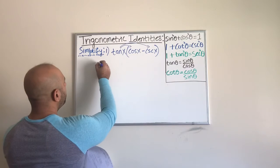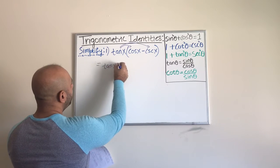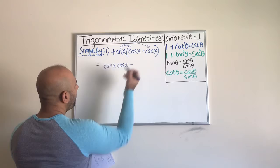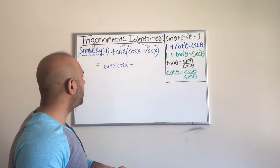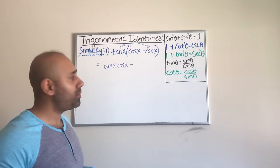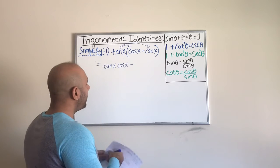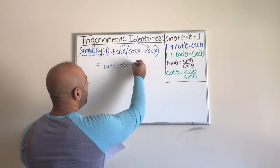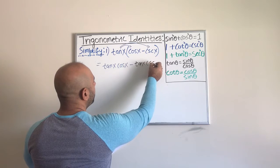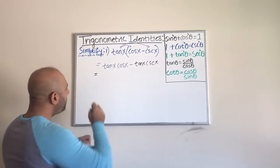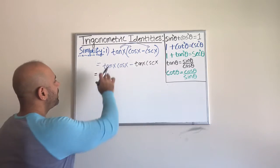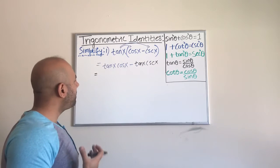So first, we want to distribute as we would do when simplifying any algebraic expression. When I distribute, this is how it's going to look: I have tan(x) times cos(x). I can't do anything with this right now, so I just write them next to each other. My next term is going to be tan(x) times cosecant(x). From here I look at this expression and ask myself, is there anything more I can do with this?